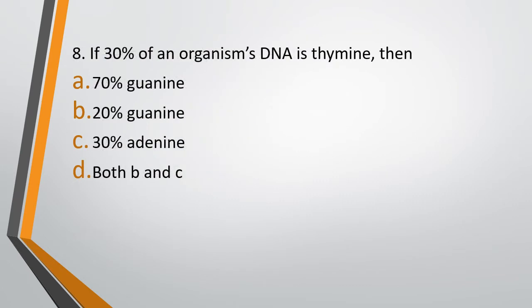Question 8. If 30% of an organism's DNA is thymine, then: Option A, 70% is guanine; Option B, 20% is guanine; Option C, 30% is adenine; Option D, Both B and C. The correct answer is Option D, Both B and C. Since thymine pairs with adenine, 30% thymine means 30% adenine, making up 60%. The remaining 40% is split between cytosine and guanine — 20% each. So 20% guanine and 30% adenine are both correct.